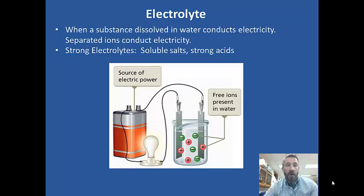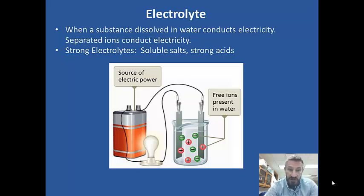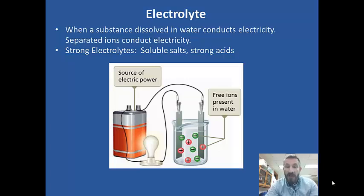What are electrolytes? Electrolytes are when substances dissolved in water conduct electricity. The reason they do that is because when the substance is dissolved, it produces ions and those ions conduct electricity. What types of substances are great electrolytes, or strong electrolytes as we call them? Things that are soluble salts — we have our solubility rules for that — and also strong acids.